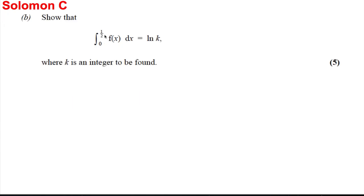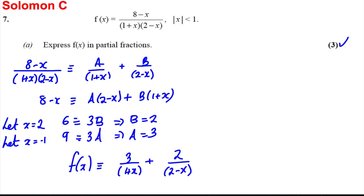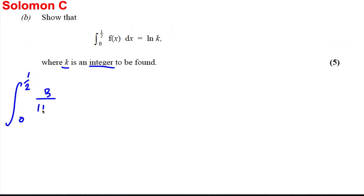Next part, we're integrating f of x and we're going to show it's equal to ln k where k is an integer which we need to find. So the integral between 0 and 1 half of f of x, which we've said is 3 over 1 plus x plus 2 over 2 subtract x with respect to x. So what's that going to be equal to? Well, let's just do a bit of separate working for each of these just to make sure we know what we're doing.